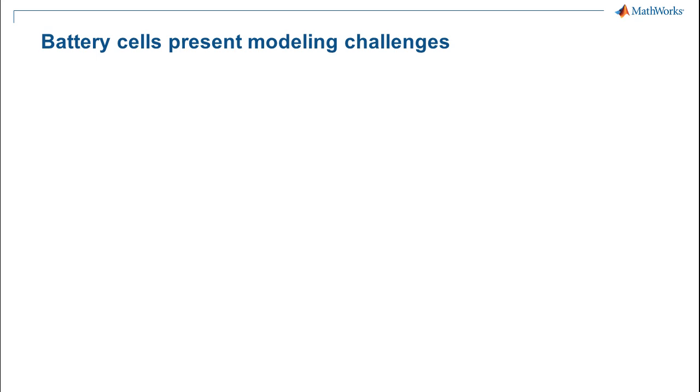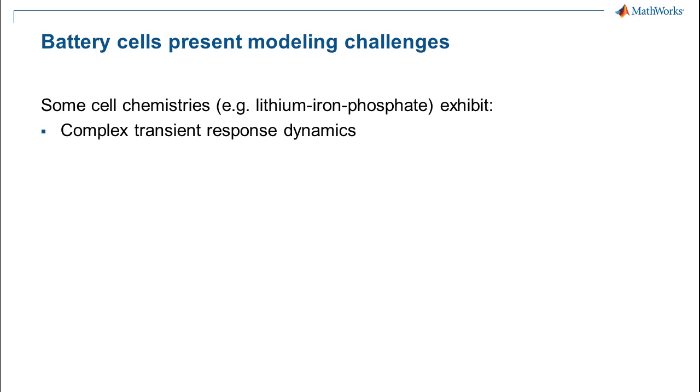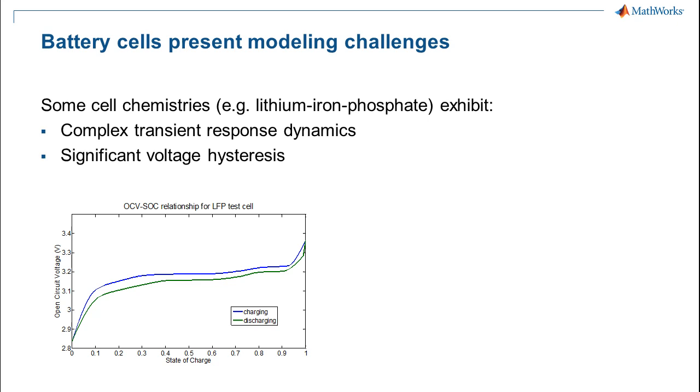Most varieties of battery chemistry present some kind of modeling challenges. Some types of lithium ion cells, such as lithium iron phosphate, tend to exhibit lots of dynamic content in the cell's transient response. This can be difficult to capture in a model. The hysteresis of the open circuit voltage is also significant. The SOC versus open circuit voltage curve is important for a battery management system because we need to use the open circuit voltage to correct our estimated state of charge.